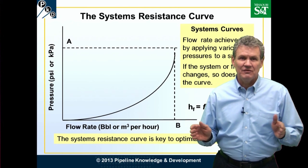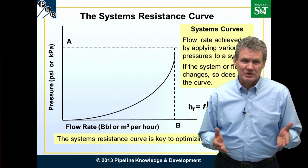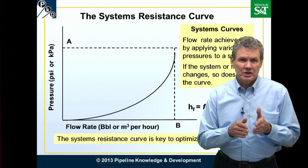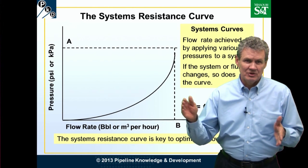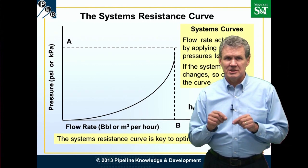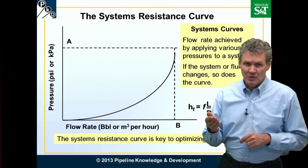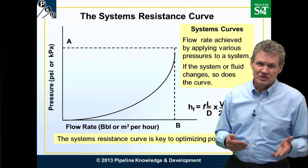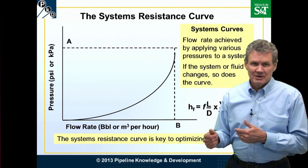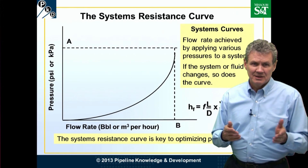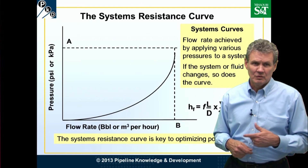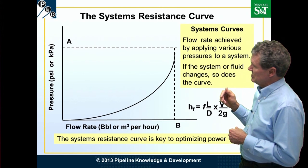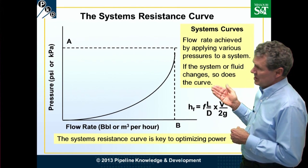This is for the entire system, and we define the system as whatever we want it to be. For example, the system may be the pipeline between compressor station A and compressor station B, or it can be the entire pipeline from beginning to end. It varies based on if we change the system, or even if we change ambient temperatures so that viscosity goes up or density changes. If we're pumping crude oil, the systems curve is going to be different than if we're pumping gasoline, or even one type of crude oil versus another.